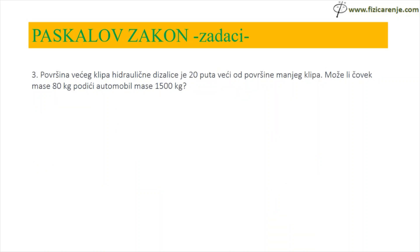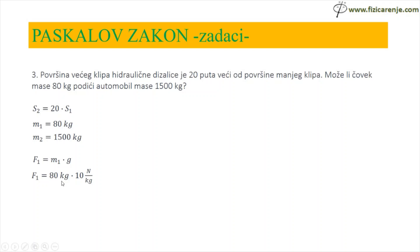Površina većeg klipa hidraulične dizalice je 20 puta veća od površine manje klipa. Može li čovek mase 80 kg podići automobil mase 1500 kg? U zadatku mi je dato da je S2 jednako 20 puta S1. Dato je da je masa čoveka 80 kg i da je masa automobila 1500 kg. Kada mi je poznata masa čoveka, mogu dobiti F1 — silu kojom on pritiska podlogu. F1 je jednako M1 puta G: 80 kg puta 10 N/kg, što je 800 N.